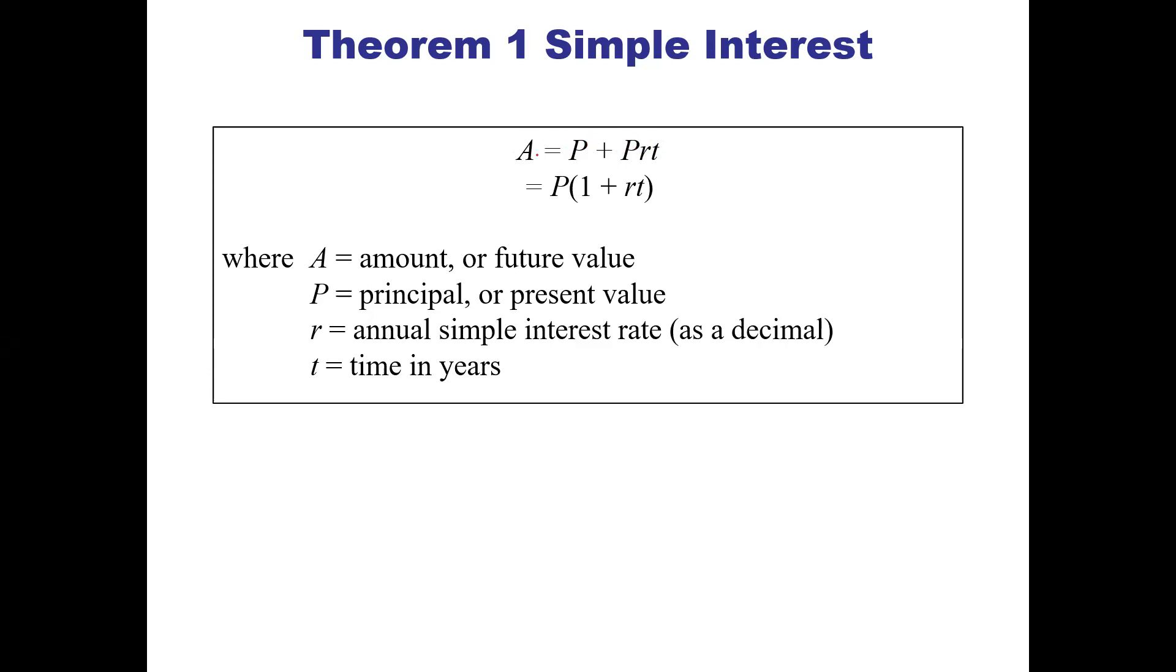If we factor this, we can pull out a P, so P times (1 + rt) equals A. The future value is going to be the principal times one plus rate times the time.